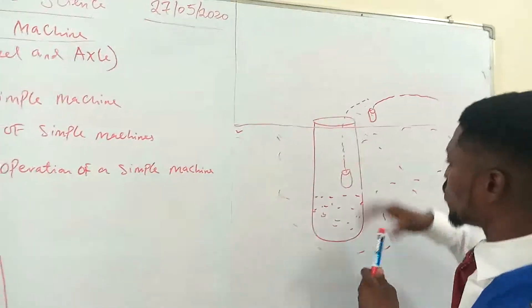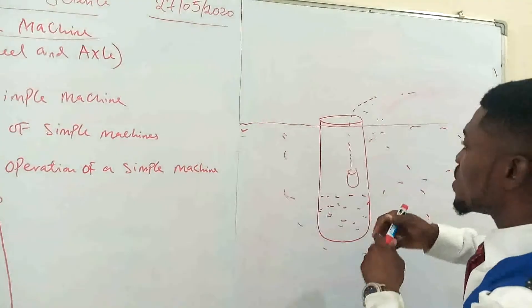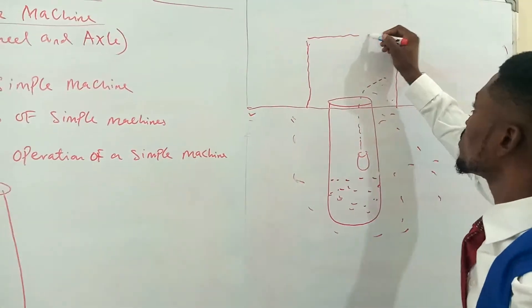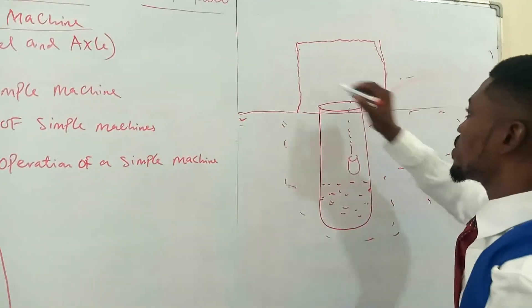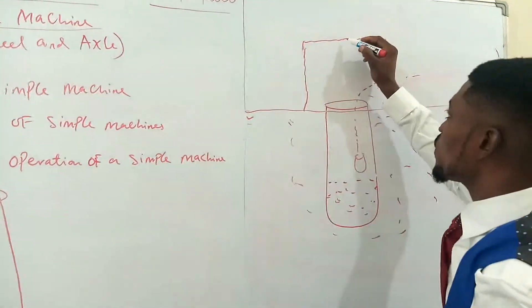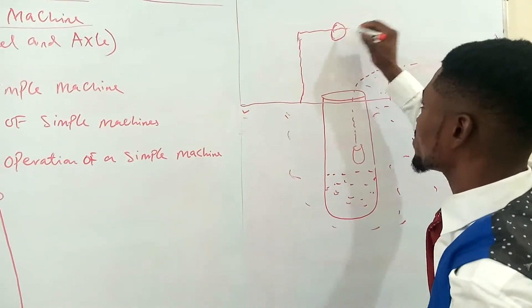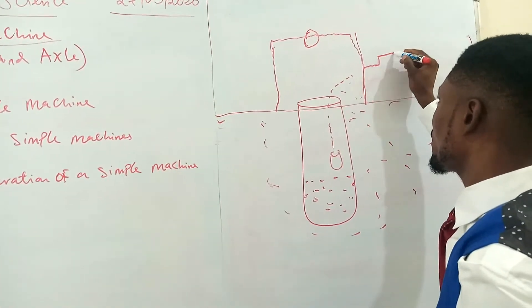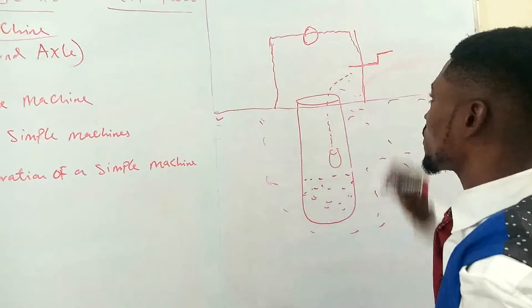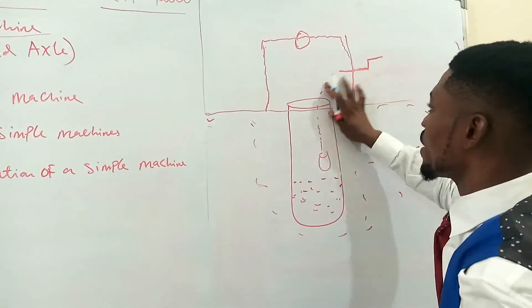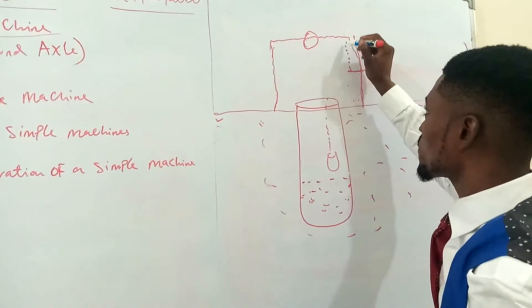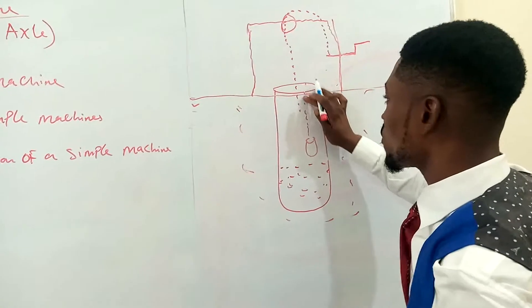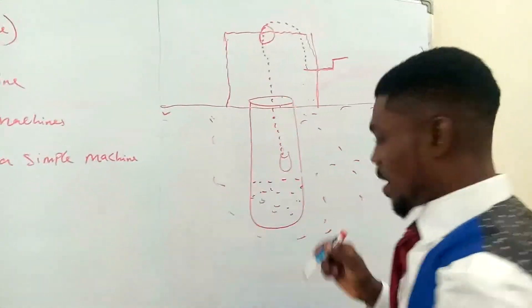But in a case where you have a simple machine, like this other diagram I'm going to draw for you. You have a simple machine, like something like a wheel. You have this in the same well. And then you have something like a wheel here. You have something like this over here that goes this way. And then you have a rope here that will come and pass through this wheel and go down to where the bucket is now.